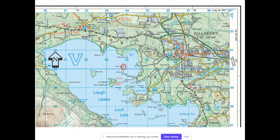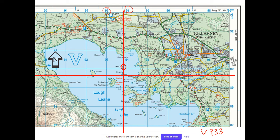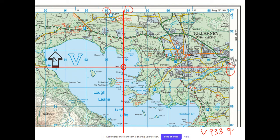For this small island, the letter is still V. The vertical line crosses between 93 and 94 — about 93.8, so we write 938. The horizontal line crosses just above 90 — about 90.1, so we write 901. The six-figure grid reference is V938901.